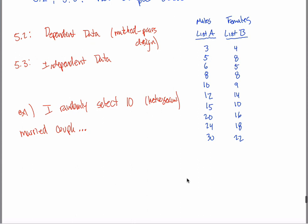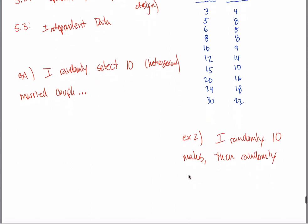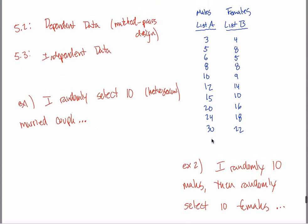But what I want you to do is compare that with what I'll call example two. Example two, instead of grabbing 10 couples, I randomly select just 10 males. Then randomly select 10 females. The key thing here is that the males and the females are not connected in any way. And record the reading habits of each.